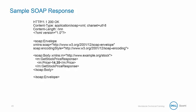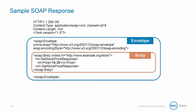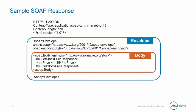Here's a sample XML SOAP response. This also contains the required envelope and body, but in our example, the getStockPriceResponse method returns a price value of $14.35.